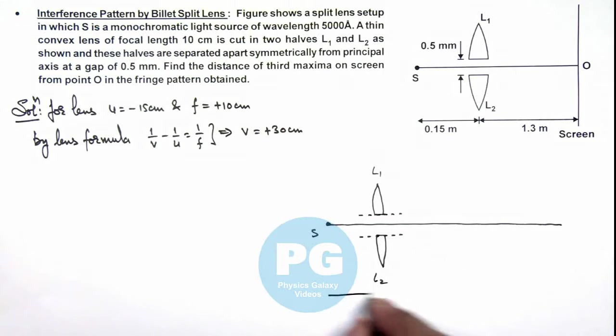So if this distance is 0.15 meter, the 15 centimeter images are obtained at a distance of 0.3 meter, that is 30 centimeter.